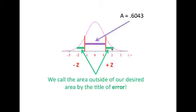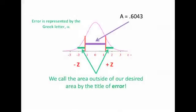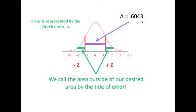Therefore they're called the error, and we will refer to them with a specific methodology. Now, the error, that area which is not included in the area that we seek, is represented by the Greek letter alpha. Looks like a little fish swimming sideways, doesn't it? We call the area outside of our desired area by the title of error. The error is represented by alpha. Alpha represents the total error area, which is this amount plus this amount.